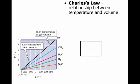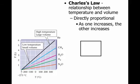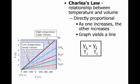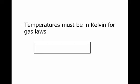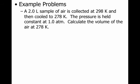Now let's look at our next law: Charles' Law. Charles' Law looks at the relationship between temperature and volume. These two things are directly proportional — as one increases, the other increases — and this graph would yield a straight line. If you increase the temperature, the volume increases; if you decrease the temperature, the volume decreases. One thing you have to be careful of when temperature is involved in these gas laws is that temperature has to be in Kelvin. So if they give you the temperature in degrees Celsius, you have to add 273 to get to Kelvin.